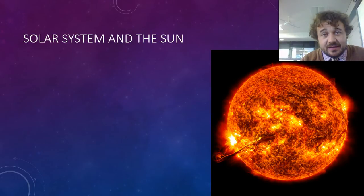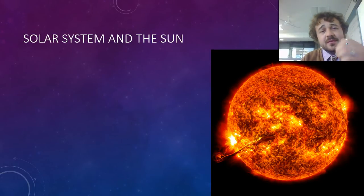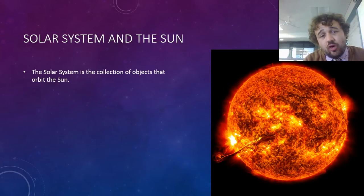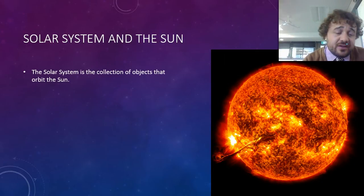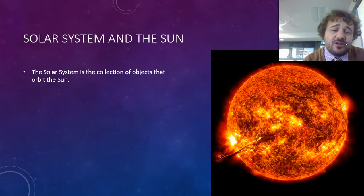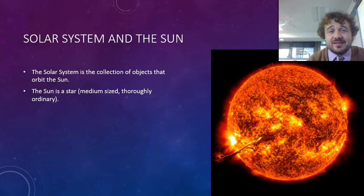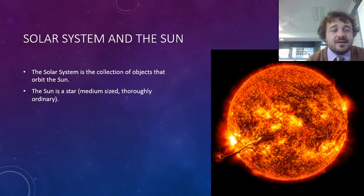So, the Sun. The Sun is the centre of our solar system and everything rotates around it. A solar system is a collection of objects that orbit the Sun — it's not just the planets, there's also an asteroid belt, the Kuiper belt, and everything else that rotates around the Sun. It's a star — a thoroughly ordinary, medium-sized star. It's not special in any way; it's only special because it has us around it.